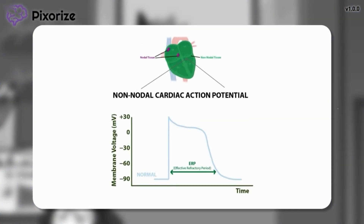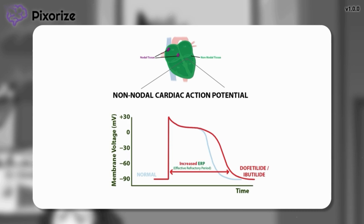Returning to our graphic, let's bring back the change in the action potential after taking Dofetilide or Ibutilide. As you can see, the prolonged repolarization is what causes a lengthened ERP. Since arrhythmias are caused by rapid electrical activations, lengthening the refractory period — during which the cell is unable to activate again — can stop the arrhythmia. This explains how Dofetilide and Ibutilide treat arrhythmias like AFib and atrial flutter and return the heart to a normal rhythm.